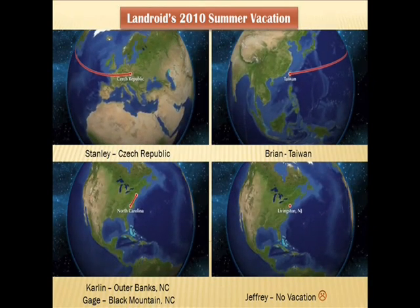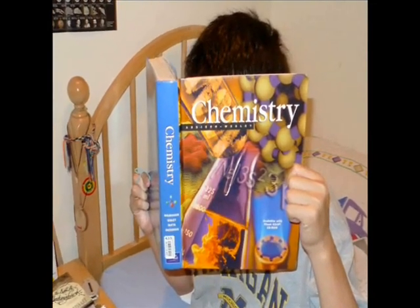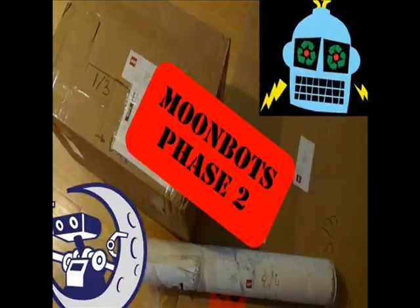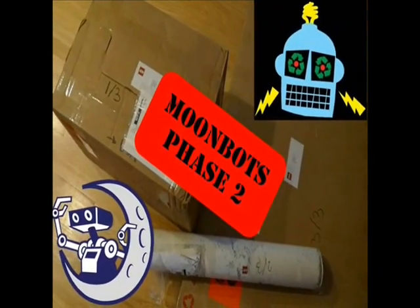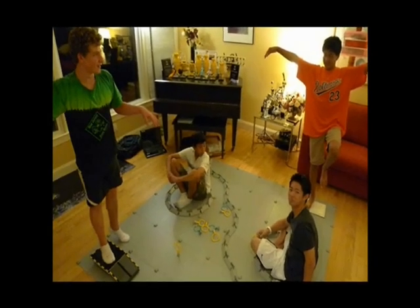After the school year ended, our team parted ways for the summer. Working through Phase 2 during the summer presented a new challenge in team time. Each of us had summer school or camp, sports, and vacations at different times. Since the MoonBots field arrived three weeks late, we were grateful for the short break it gave us.